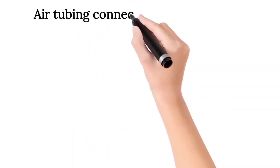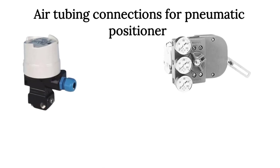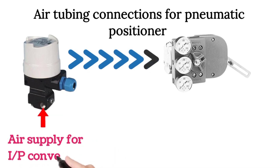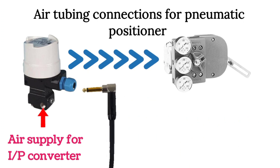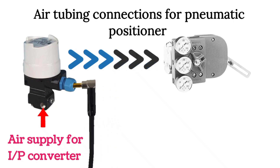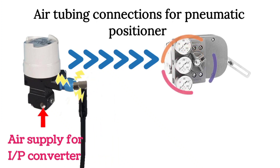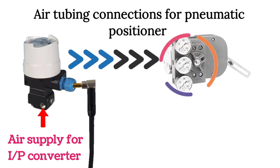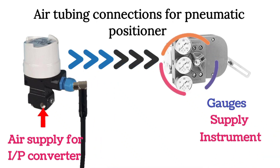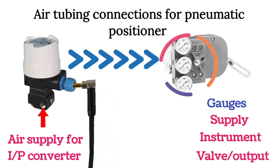Now I will explain air tubing connections for the pneumatic positioner. An I2P converter is used to control the pneumatic positioner. Air supply for the I2P converter is shown in the image by the arrow. A 4 to 20 milliampere electrical signal is fed here. We use two wires for connections — one is connected at the positive terminal and one at the negative terminal. In the circle, three pressure gauges are shown: one gauge is for air supply, usually labeled 'instrument.' The I2P converter output is connected at this port. One gauge is for control valve air or output air, and this port is connected at the control valve.